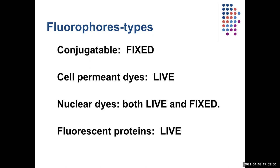We're biologists — we like to study things live and mess with them to see what happens. One of the first ways to do that was through a series of cell-permeant dyes, developed by the same person who gave us GFP — Roger Chen. His lab developed some cell-permeant dyes that are still used today. They tend to be fairly nonspecific. There are some calcium dyes that change with the amount of calcium, though they can be a little tricky to use, but you can do live experiments with them.